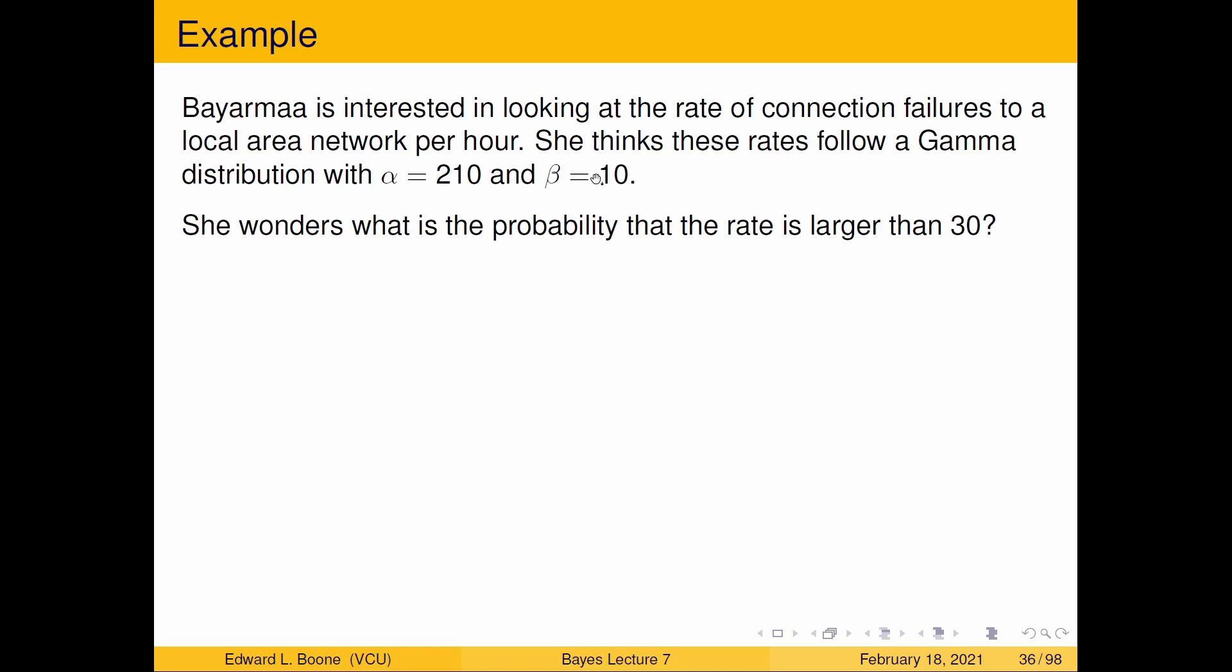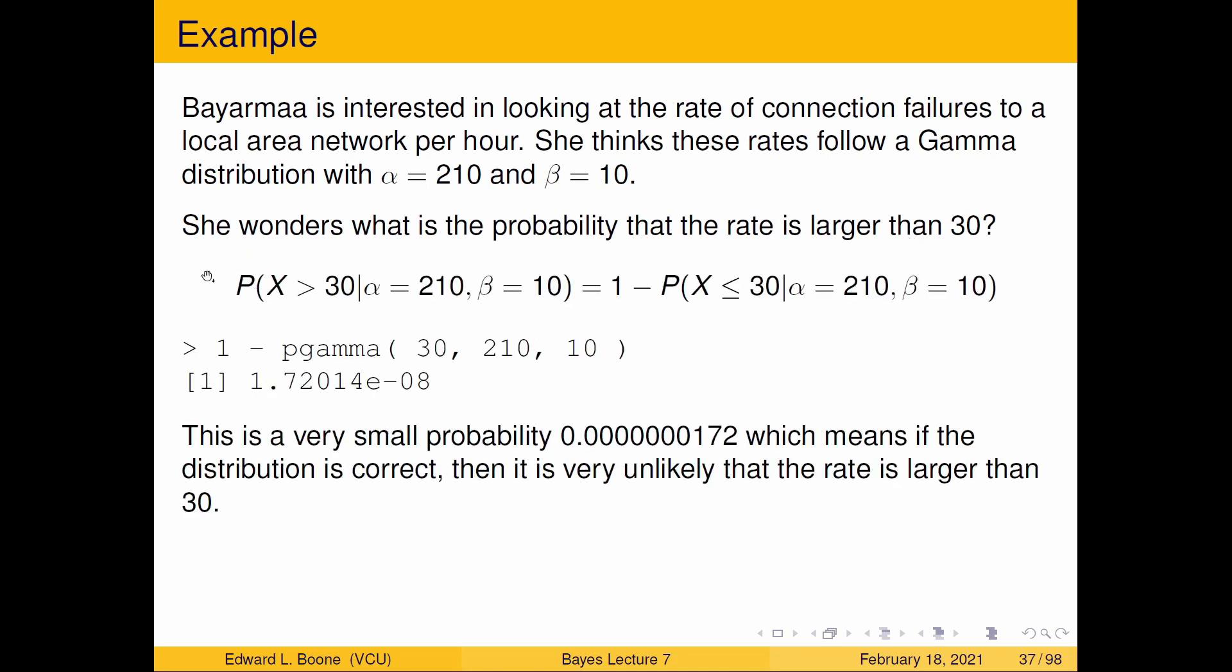So, in this case, the mean would be around 21. She wonders, what's the probability that the rate is higher than 30? So, what do I know? I know that this is what she's interested in, and here, if I do this, this is the opposite of my CDF. My CDF is less than. So, I would trace this to 1 minus probability X is less than or equal to 30, alpha is 210, beta is 10. I'm just putting the parameters here so it's obvious what we're looking at. So this becomes 1 minus pgamma, 30, 210, and 10.